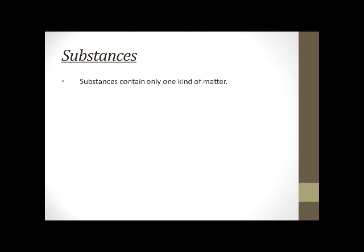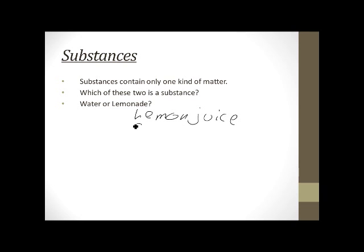So more on substances, substance can contain only one kind of matter. If you have more than one kind of matter in it, it's not a substance. So which of these two is a substance, water or lemonade? Well, let's see. What's in lemonade? I'm going to make some lemonade. Well, I need lemon juice, sugar, otherwise it's just going to be sour, and what's the point and water? Well, since there's three different kinds of matter in there, it can't be a substance. Water, however, is straight up H2O. So one kind of substance, one kind of matter, it's considered a substance because it's going to be the same throughout.